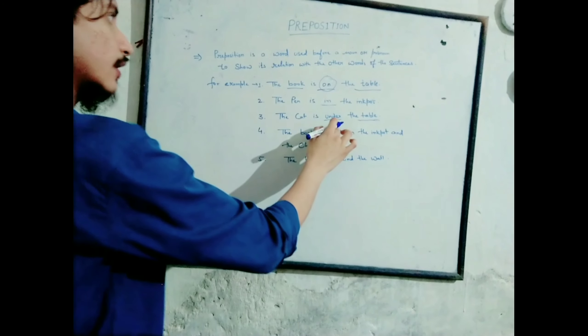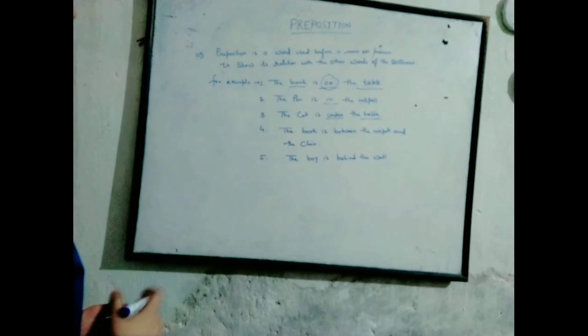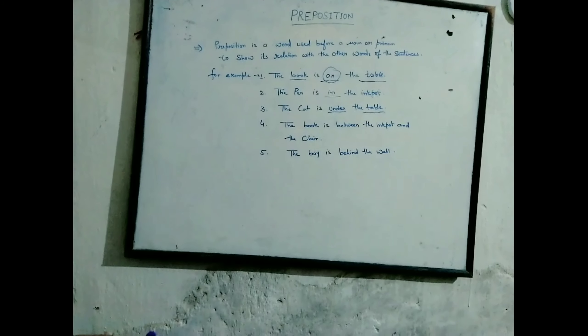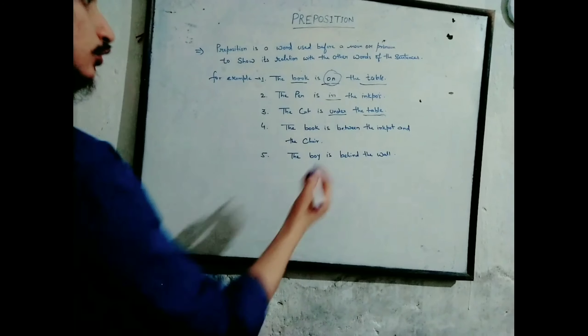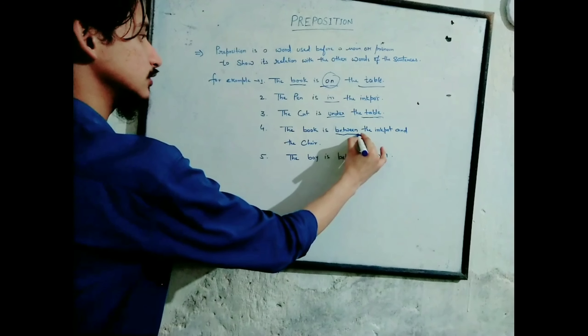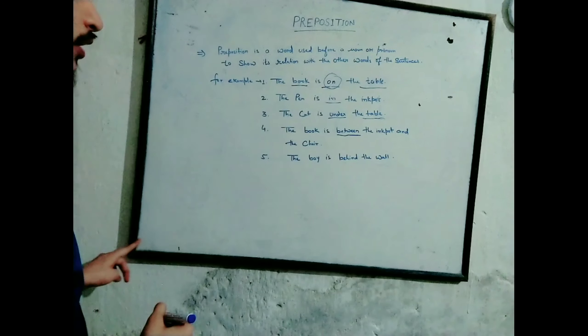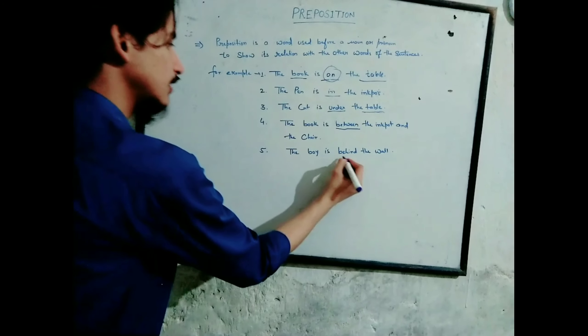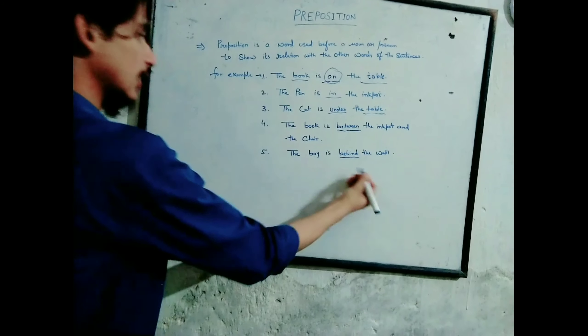The fourth one is: the book is between the ink pot and the chair, so 'between' is the preposition. And the fifth one: the boy is behind the wall, so in this sentence 'behind' is a preposition.